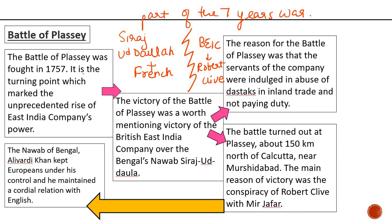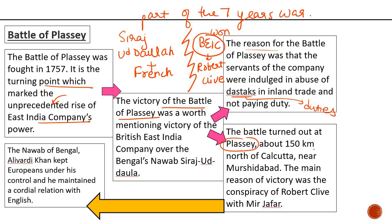The British East India Company was headed by Robert Clive. It is the turning point which marked the unprecedented rise of the East India Company's power, because the result of this battle was British East India Company's victory. The victory at the Battle of Plassey was a major victory for the British East India Company over Bengal's Nawab. The reason for the Battle of Plassey was that the servants of the company were indulging in abuse of dastaks — permits — in inland trade and not paying duties. The battle took place at Plassey about 150 km north of Calcutta near Murshidabad.